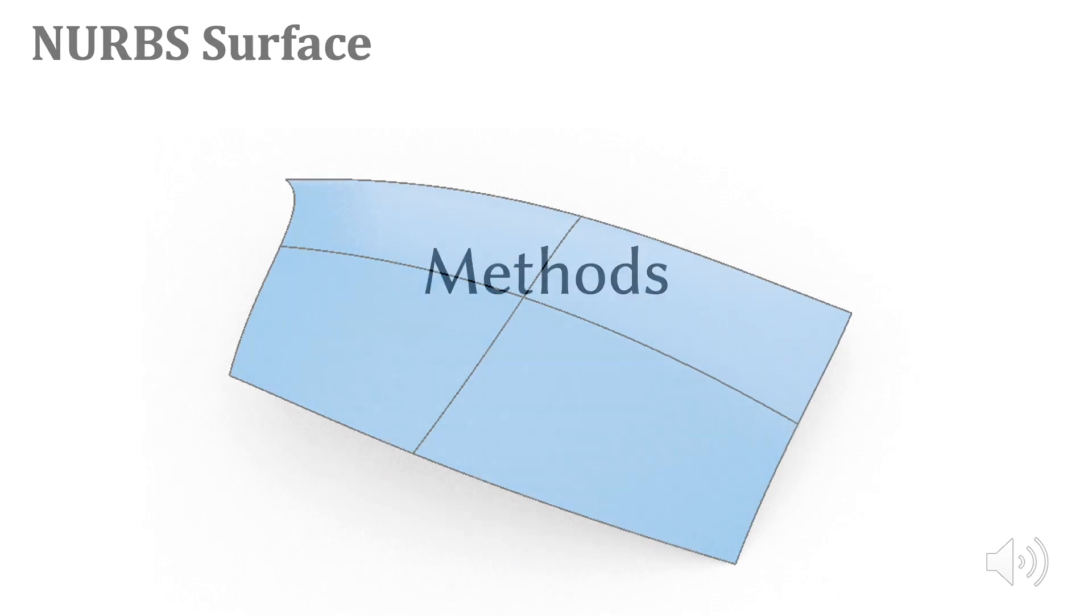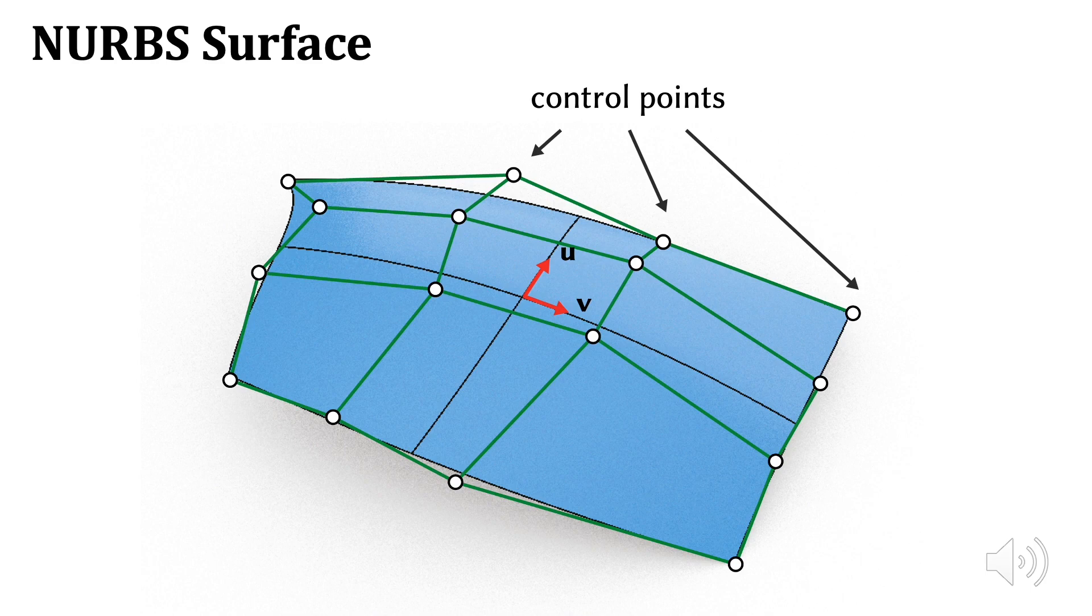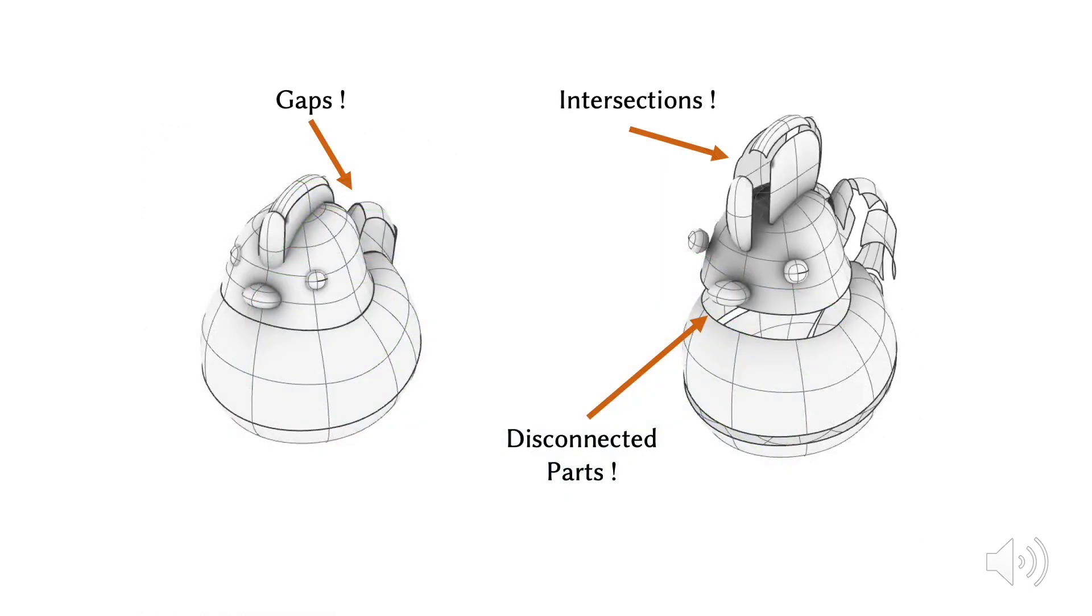In our work, we use NURBS as our boundary representation, including both patches and closed primitives such as spheres. We make no assumptions on the connectivity of these patches. We support input with gaps between primitives, self-intersections, and even completely disconnected parts. This allows artists to model freely without needing to worry about the hidden limitations of downstream volumetric mesh generation.